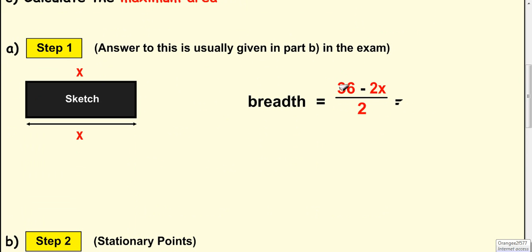I can simplify this to 36 divided by 2, which is 18, and 2x divided by 2, which is x. So I want the area of this base. That would be length multiplied by breadth. So x times 18 minus x. So area of x equals x times 18 minus x. Multiply it out to get your function. So this function is for the area of the base.